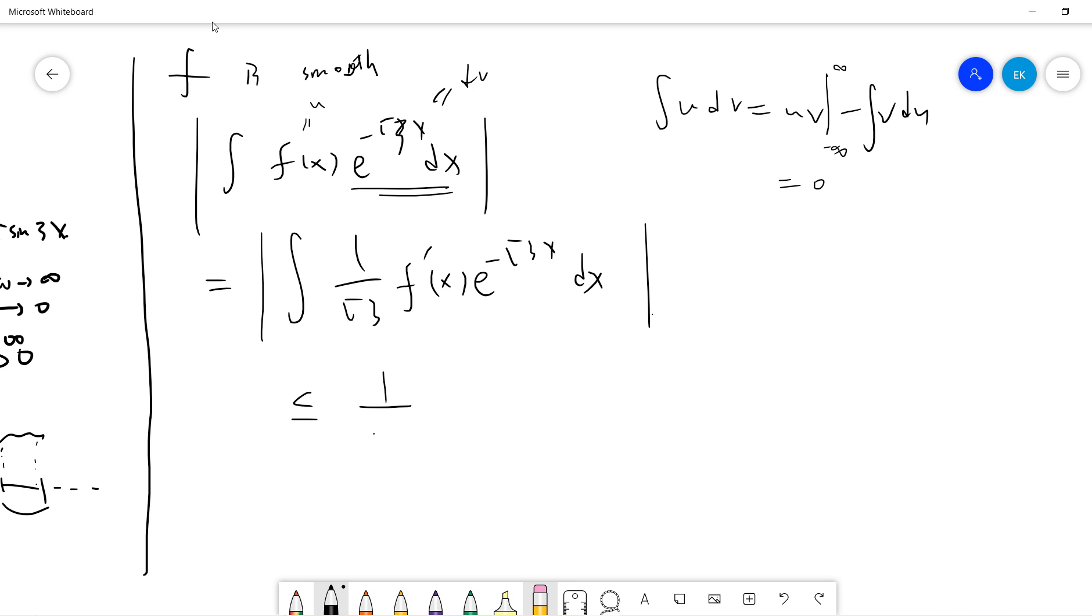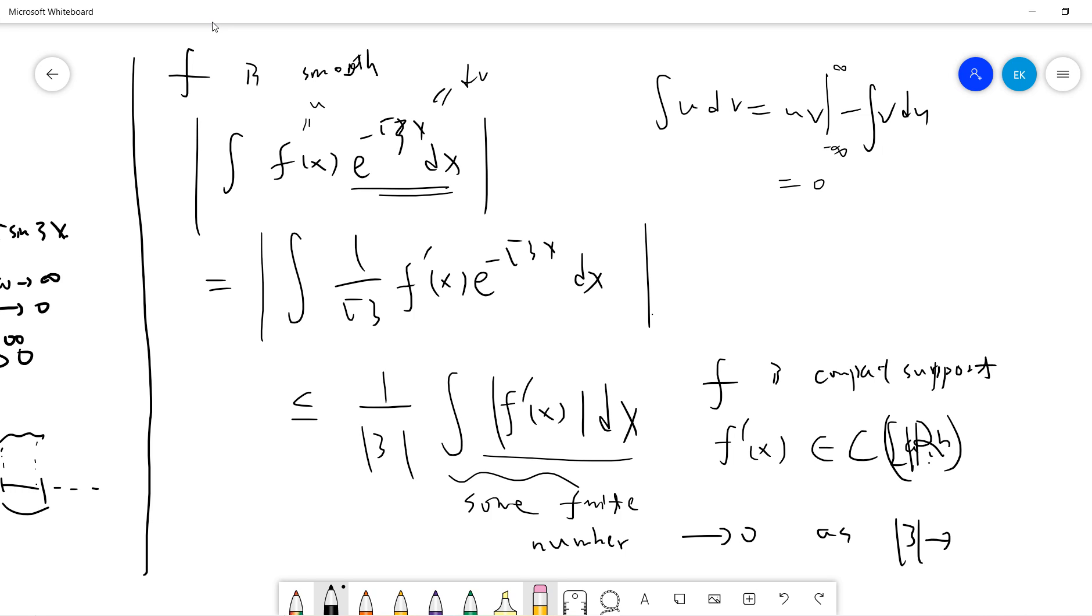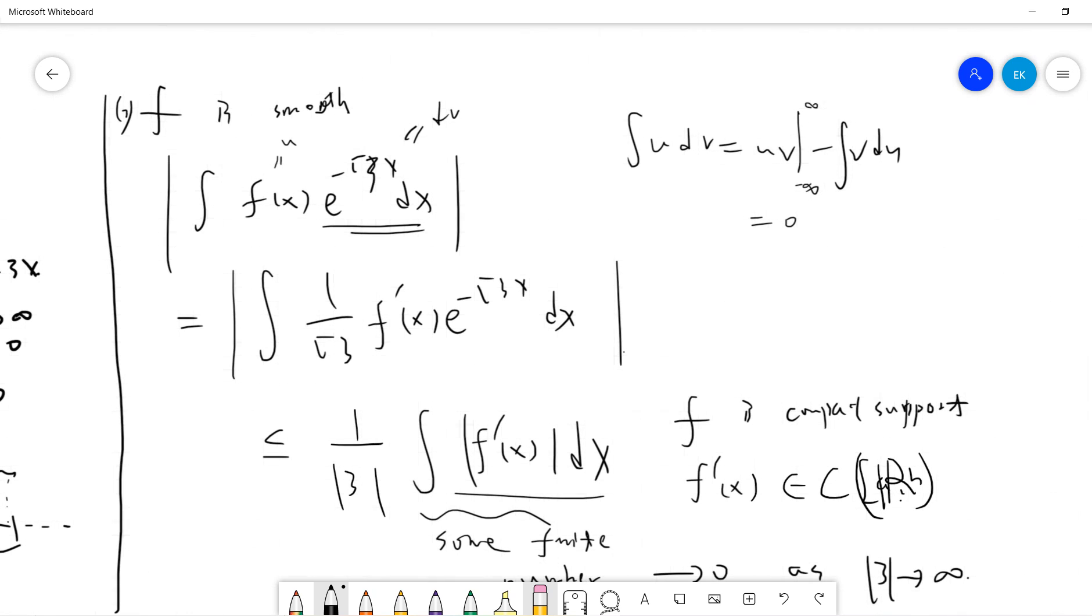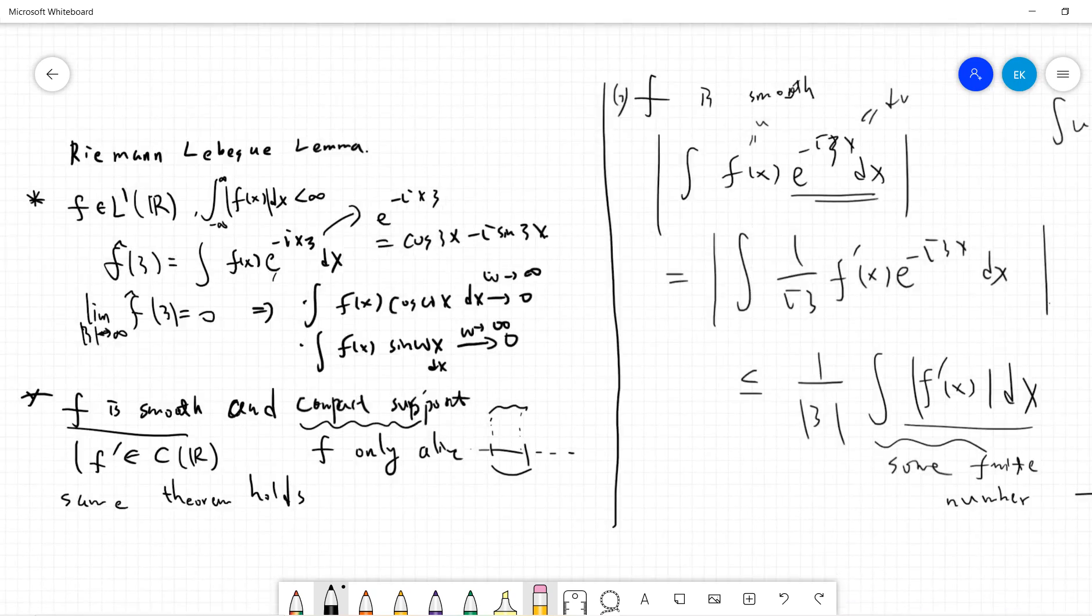And this is bounded by 1 over c times integral f prime of x dx. But we know that f is compact support and f is differentiable, so this is a continuous function on R. So that means this term is bounded, just some finite number. So it becomes zero as c goes to infinity. Okay, so this is the easiest way to prove the second.